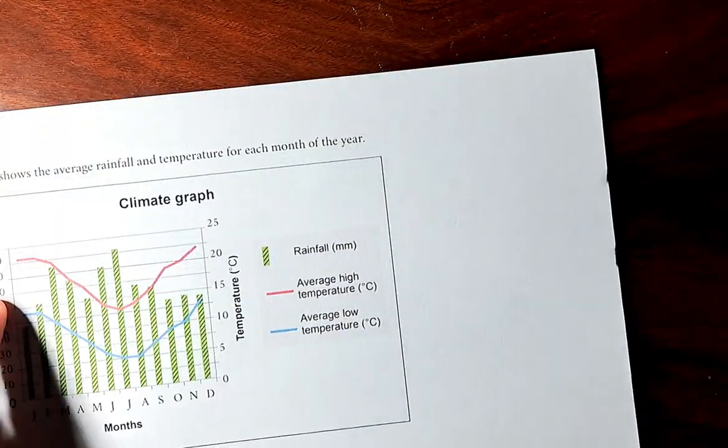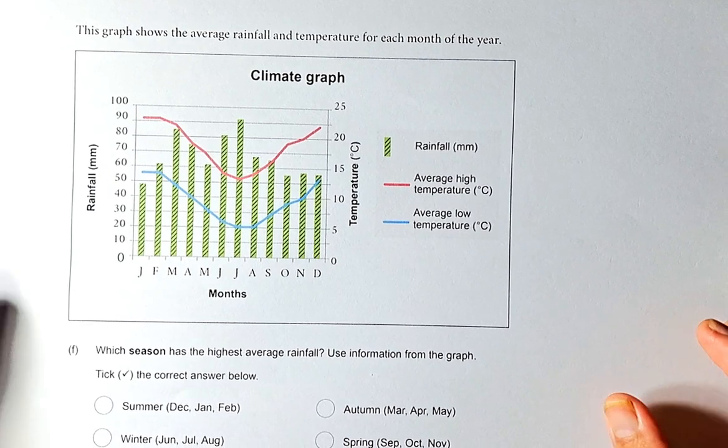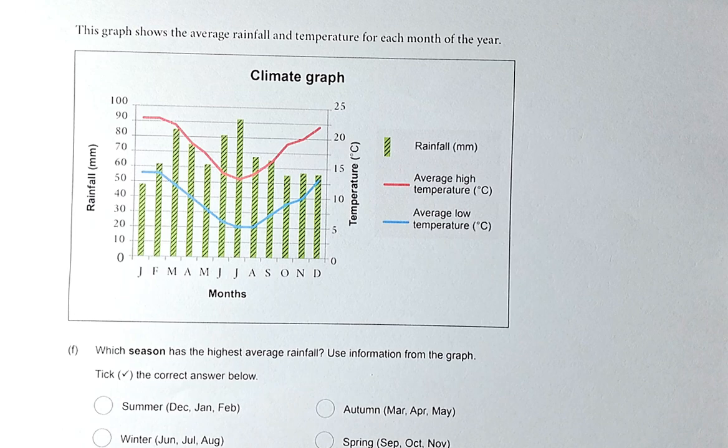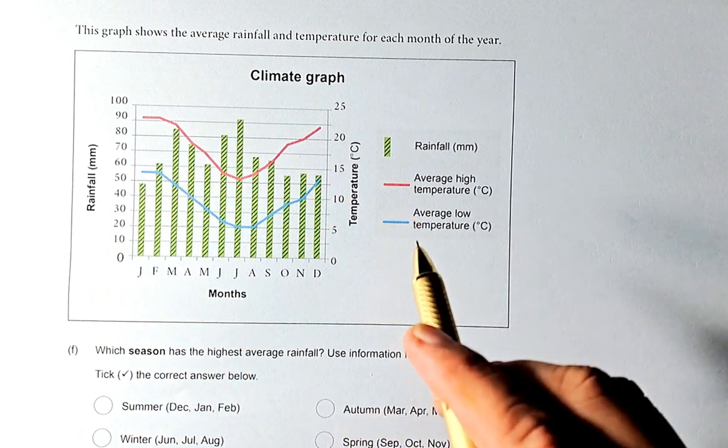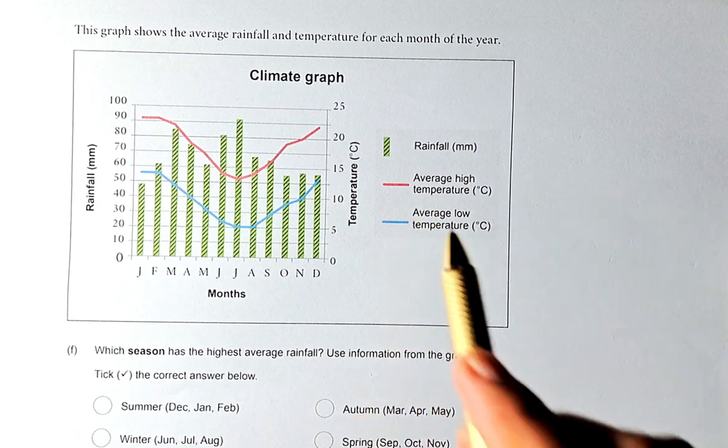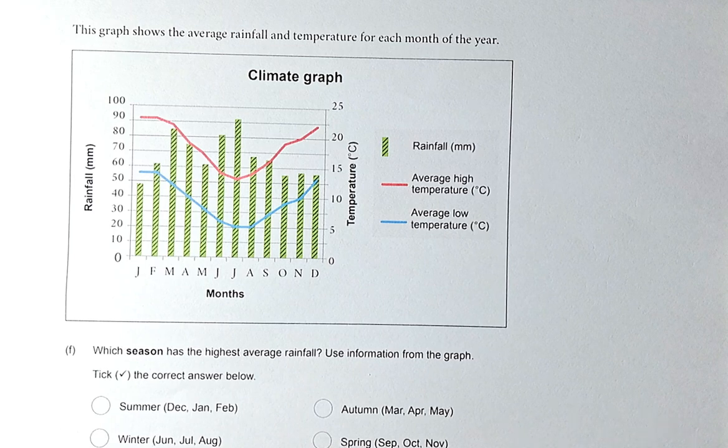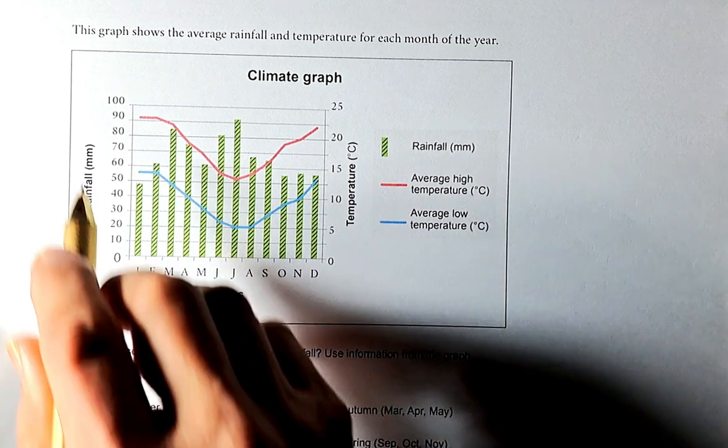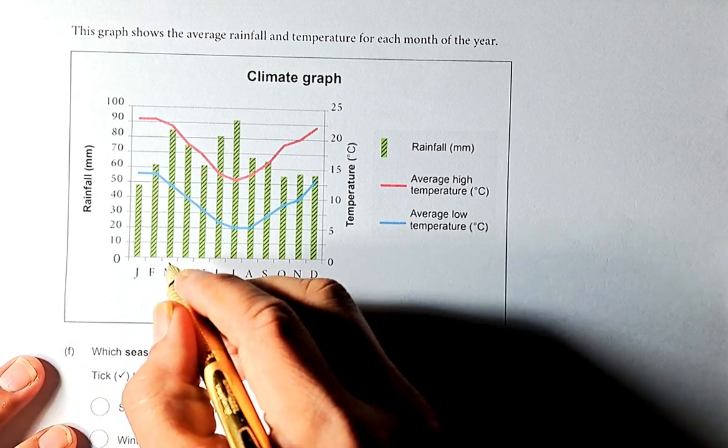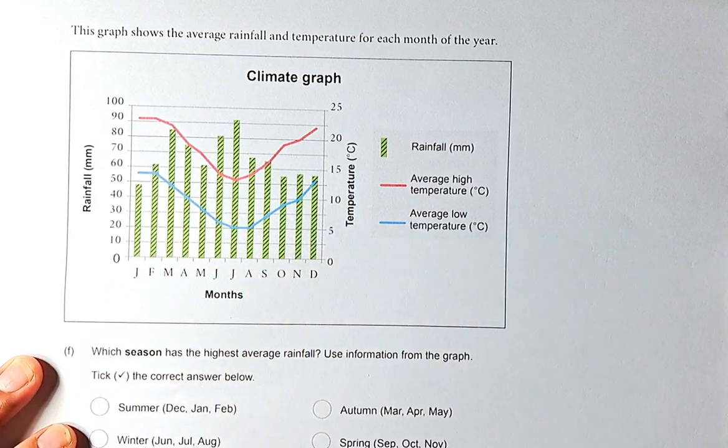The last question, you need to interpret a graph. This is question 3F of this paper. The graph shows the daily average rainfall and temperature for each month of the year. The green bar is the rainfall and the red and blue lines are the average temperature. The red line is the high temperature and the blue line is the low temperature. Which season has the highest average rainfall? We are not interested in the red line or the blue line, we are only interested in the green bar. You can see most of them are in this region here, the highest rainfall in this region.